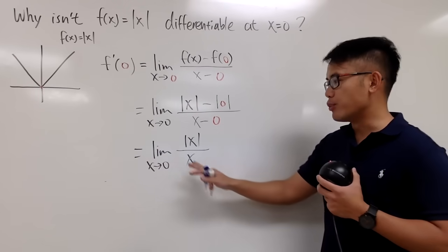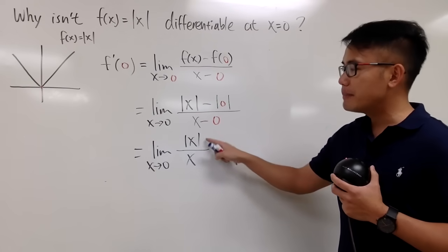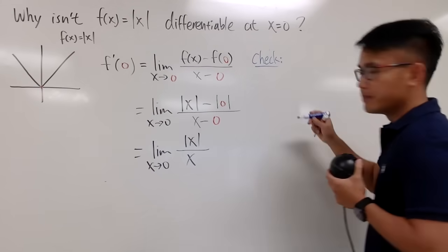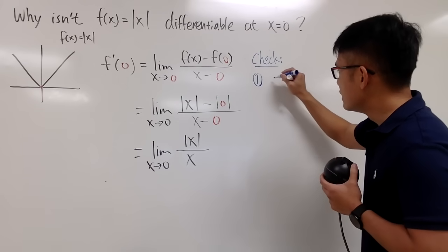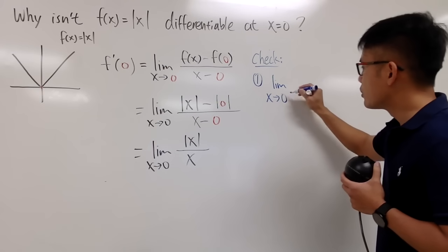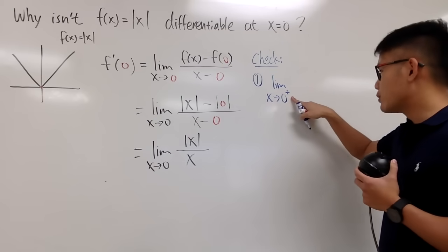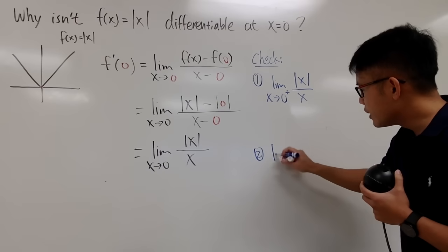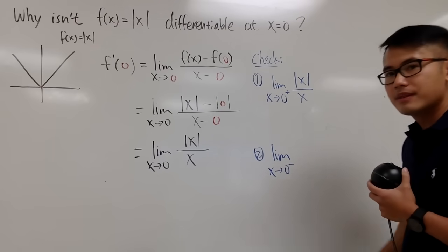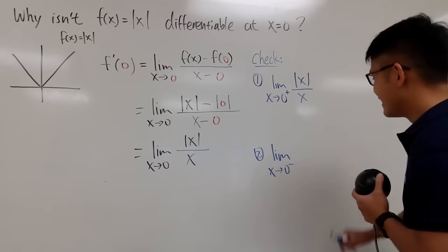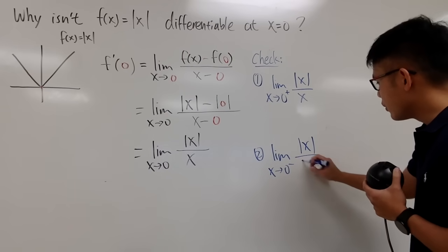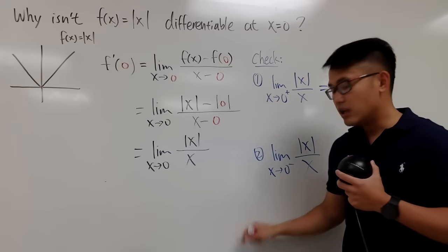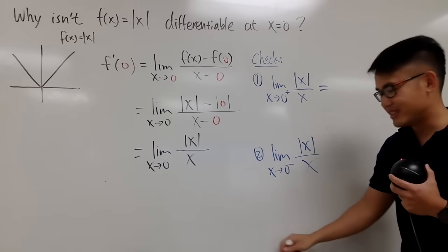In this case, we actually have to break this down into two pieces. The truth is, the absolute value function is secretly a piecewise function. So here is the usual check we will have to do. First, I will check the limit as x approaches 0 from the right direction, the positive direction — I'll put this as 0 plus — of absolute value of x over x. And secondly, we will also check the limit as x approaches 0 minus, from the left-hand side, of absolute value of x over x.